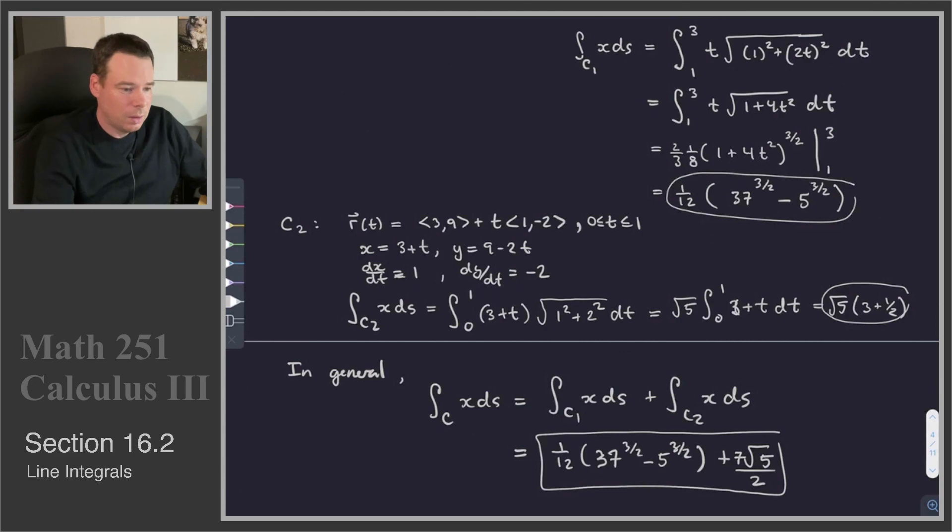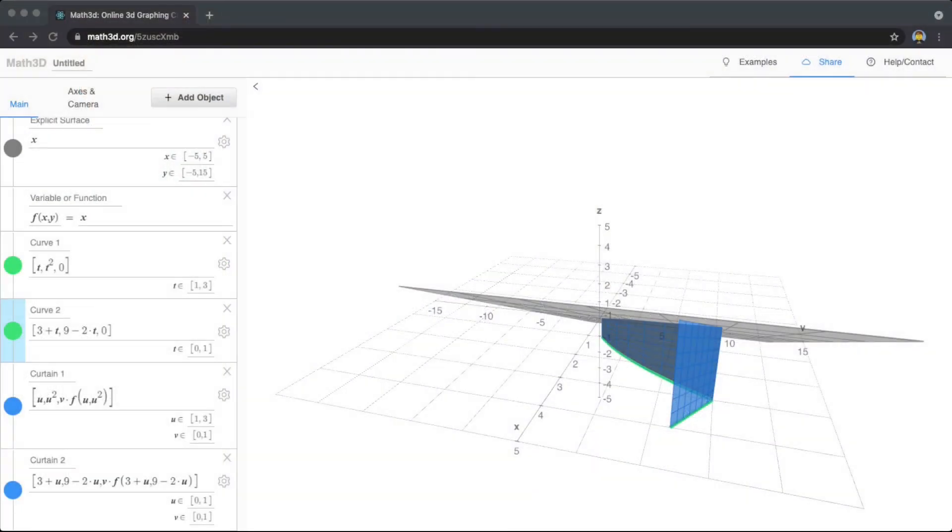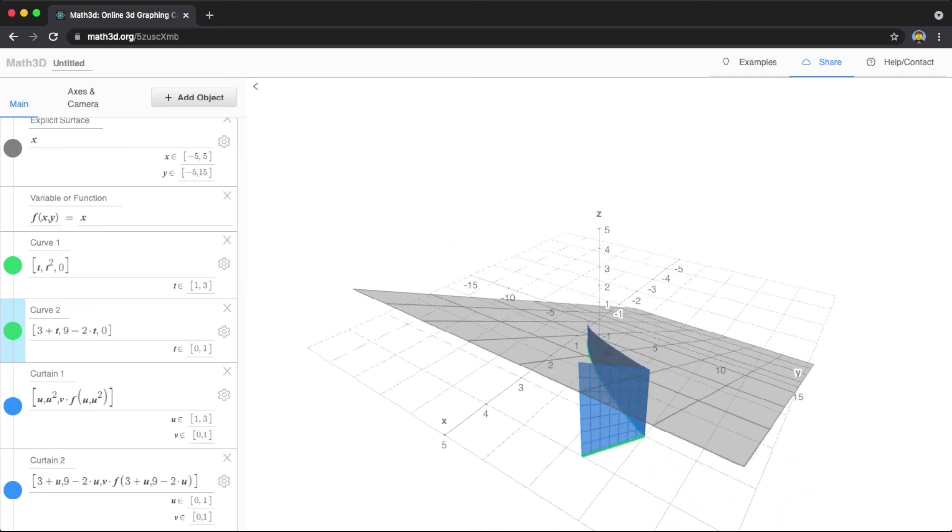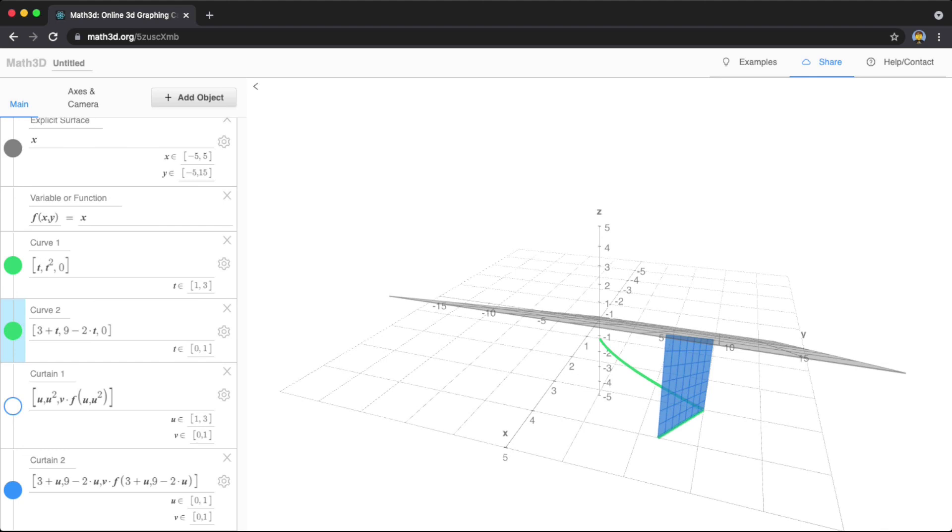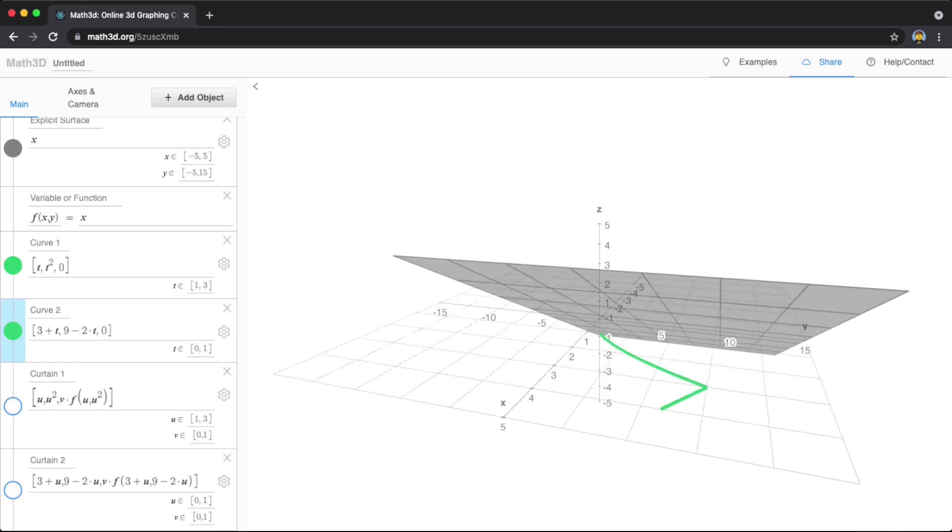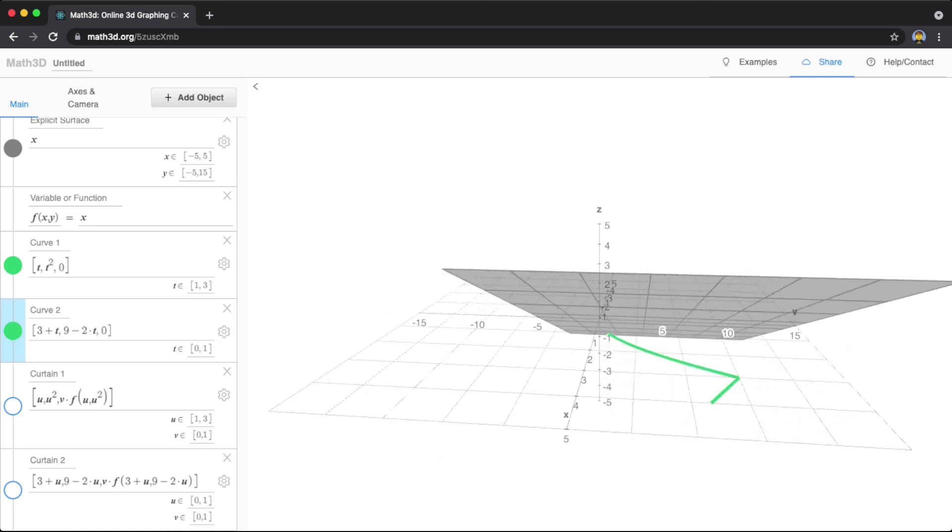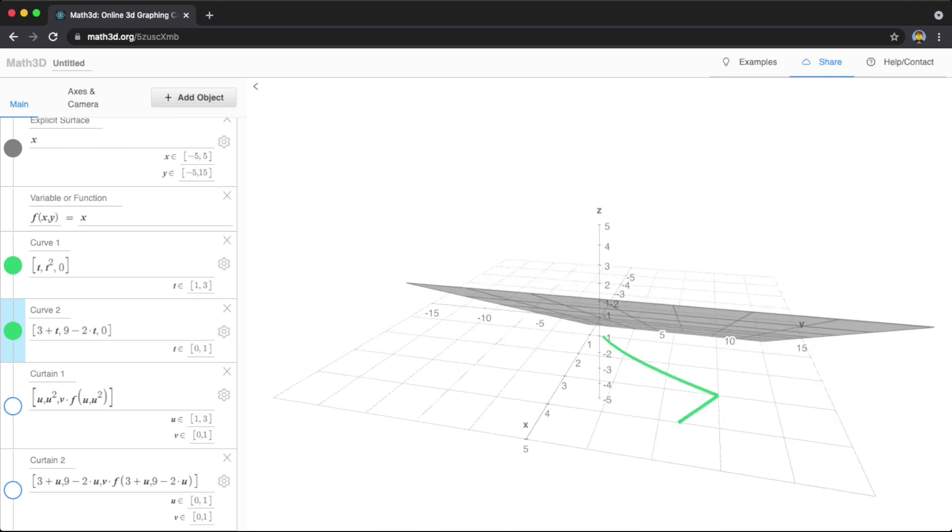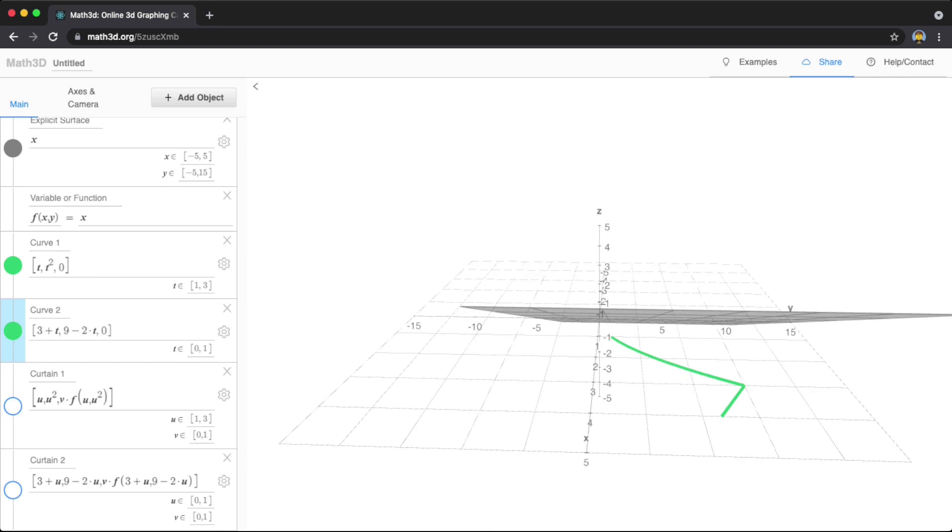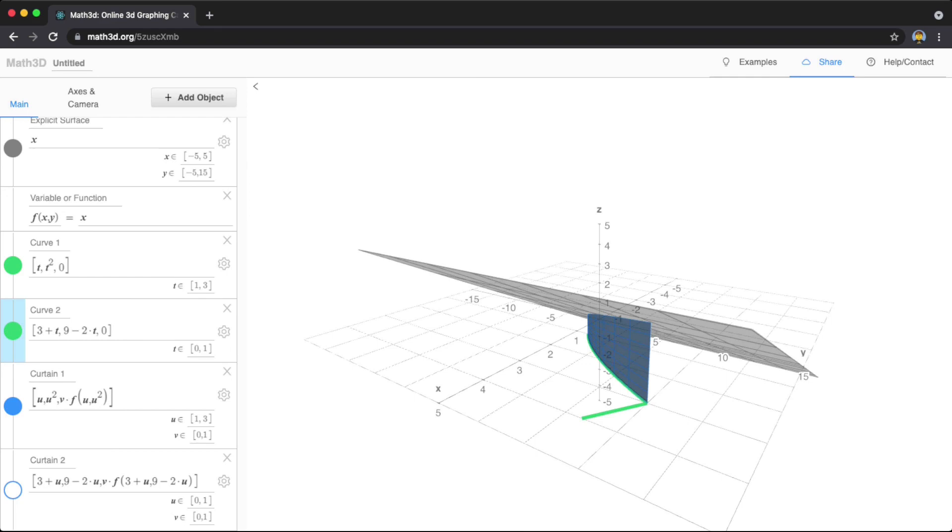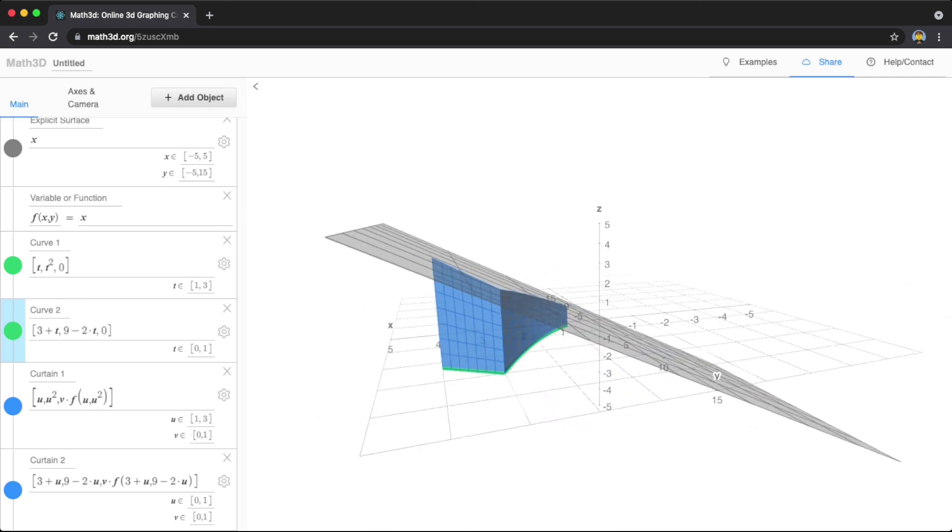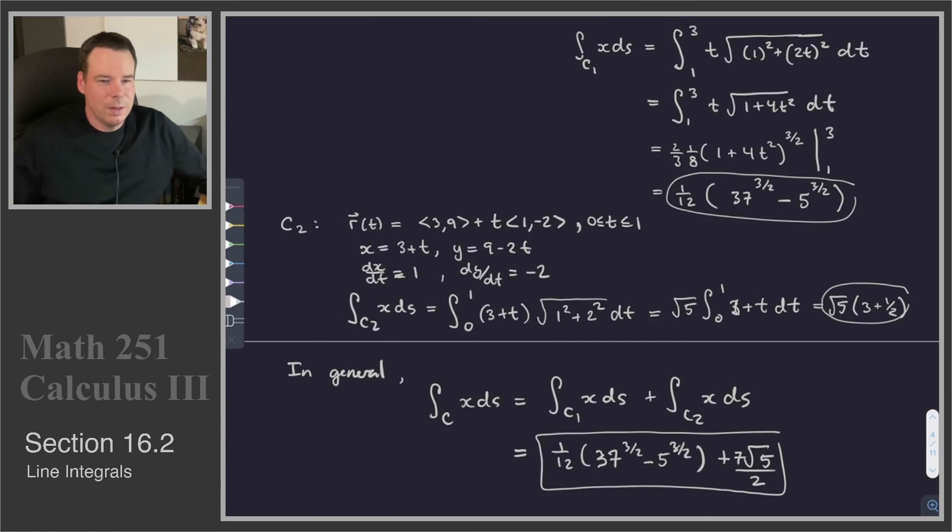Now what does that represent? What did we just compute? What we computed is essentially the area of this blue surface. So again, the idea was we have this function f(x,y)=x, so that's basically the plane z=x, and we wanted to integrate over this curve, which I've shown in green, that's the curve C with respect to arc length. So effectively we are calculating the area between this green curve and the surface. So if I fill in that region between the first portion of the green curve and the surface, and then the second portion of the green curve and the surface, what we've effectively calculated is the area of this blue region.